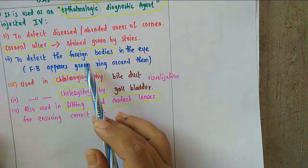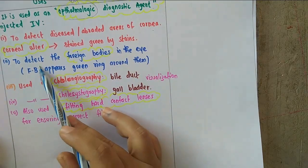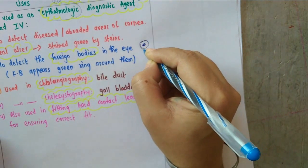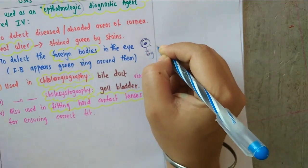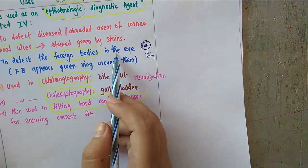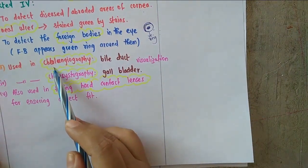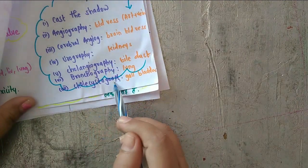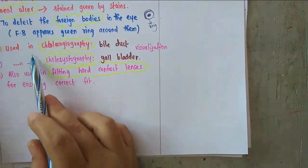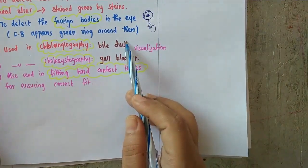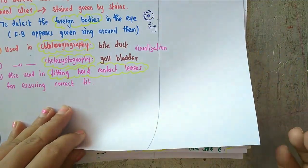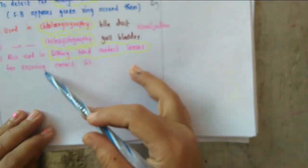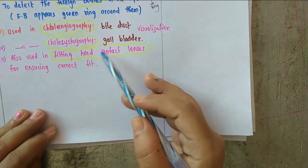Fluorescein sodium is also used to detect foreign bodies in the eye — foreign bodies appear with a green ring around them, allowing detection. It is used in cholangiography — X-ray examination of the bile duct — and cholecystography — X-ray examination of the gallbladder. It is also used in the fitting of hard contact lenses for ensuring the correct fit.